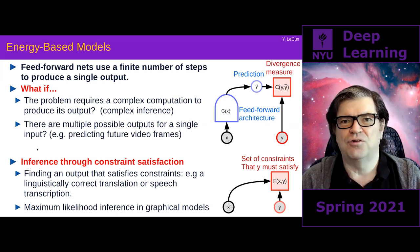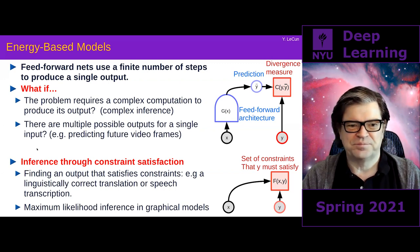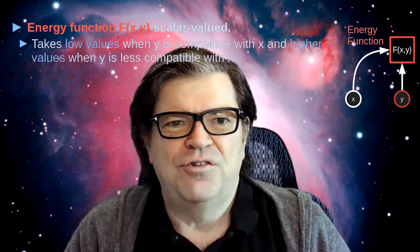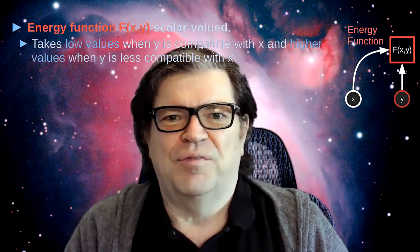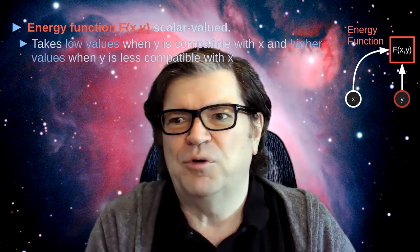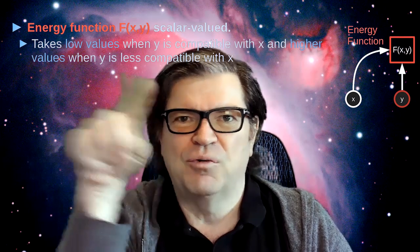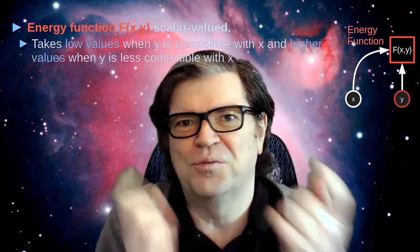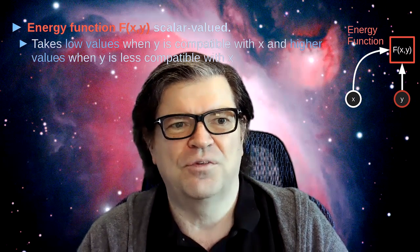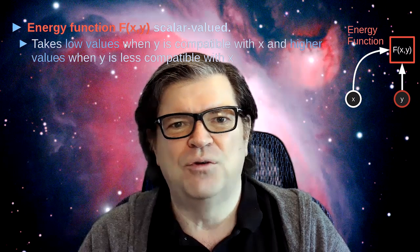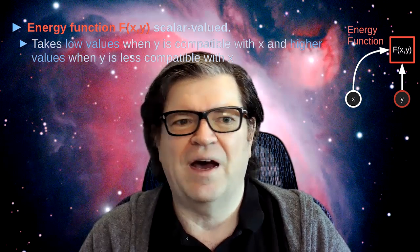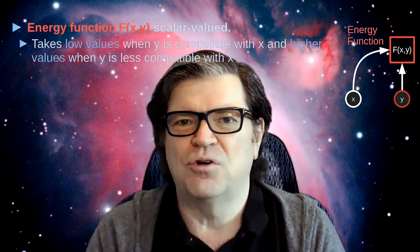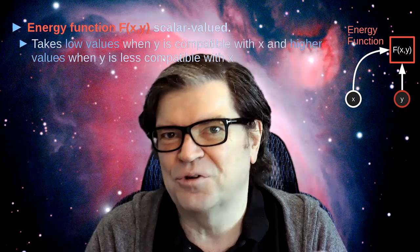Factor graphs generally are interpreted in the context of probabilistic models, but I'm not going to do that. Our energy function f of x, y is a scalar-valued function that produces a single output. The idea is to make it take low values when y is compatible with x and higher values when y is less compatible with x. So it's a measure of incompatibility, not compatibility.